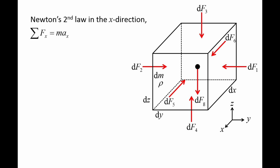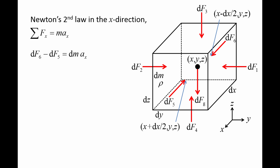Applying Newton's second law in the x-direction: df6 minus df5 equals the mass of the fluid element dm times the acceleration of the fluid element in the x-direction, ax. If we label the center of the fluid element as some point in space, then both df5 and df6 act at a distance one-half dx away from the center. df5 acts at a point x plus half dx, y, z, and df6 acts at point x minus half dx, y, z.